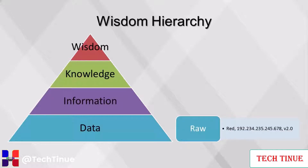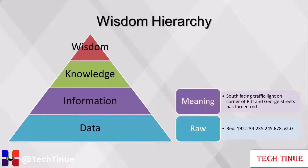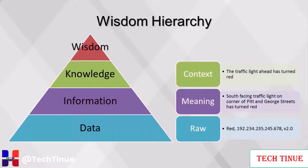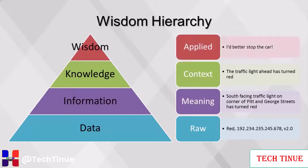Data are numbers or text without any context. Information provides meaning from data, often combining multiple data points to produce a tangible idea. Knowledge provides context from the information, making it directly applicable to a situation. Wisdom applies the knowledge to make a decision. The original data has become useful, enabling an action to be taken.